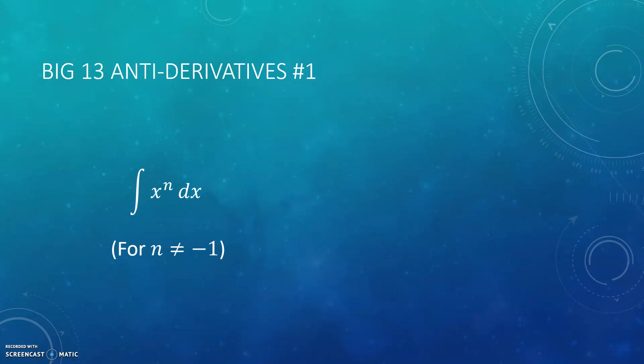This is the first big one of the big 13. If you have x to the n, as long as n is not negative one — so this works if you have x squared, x to the one half, or x to the negative two — then you add one to your exponent and you divide by that number. It makes sense because when you're doing derivatives, you bring down the exponent and subtract one from the exponent, so when you do the antiderivative, you're doing the opposite of that.